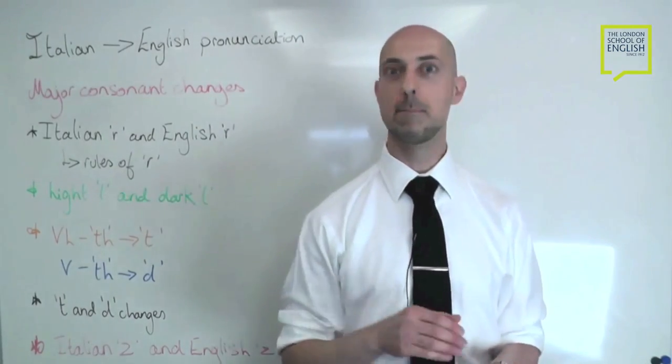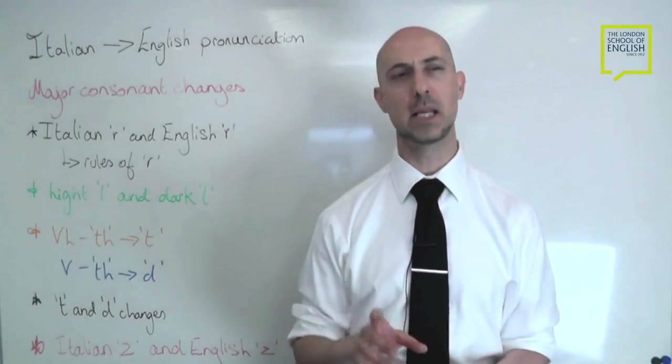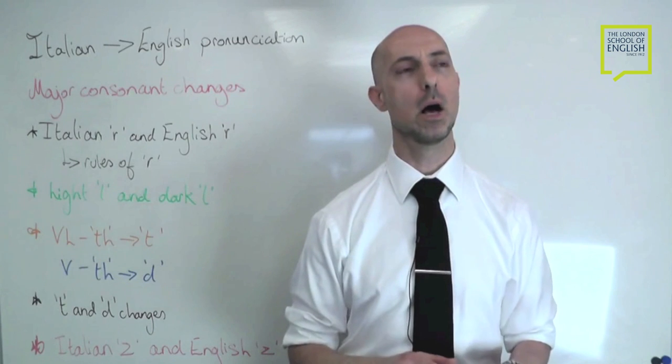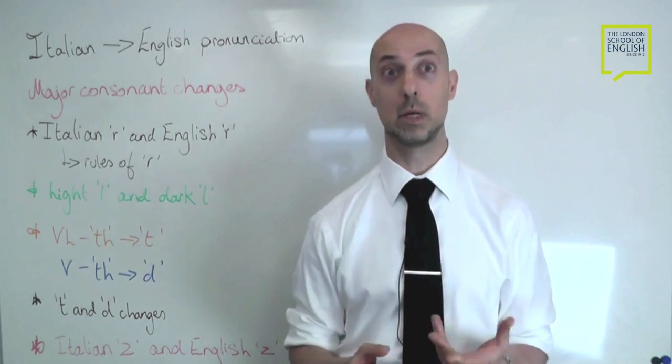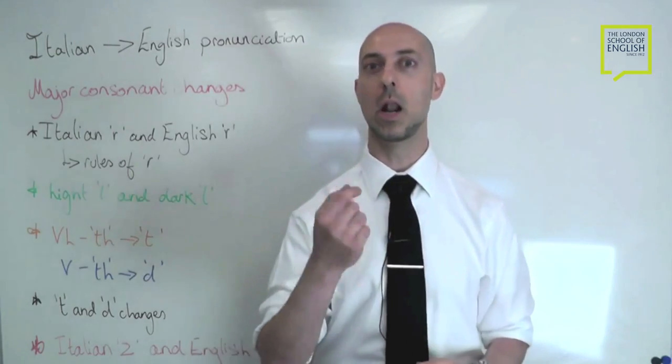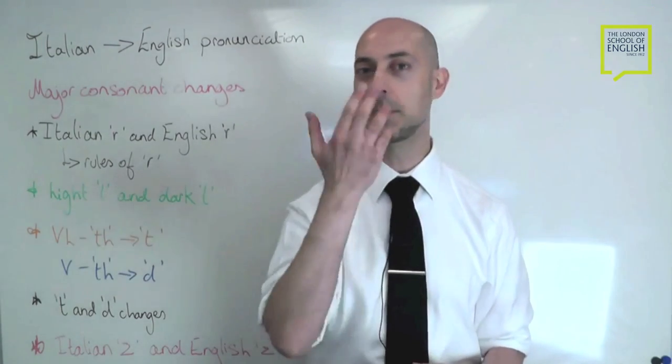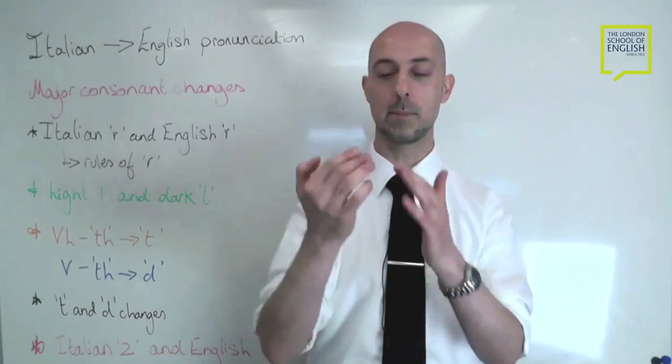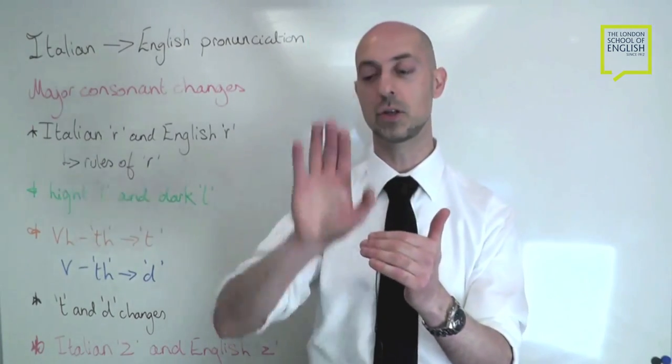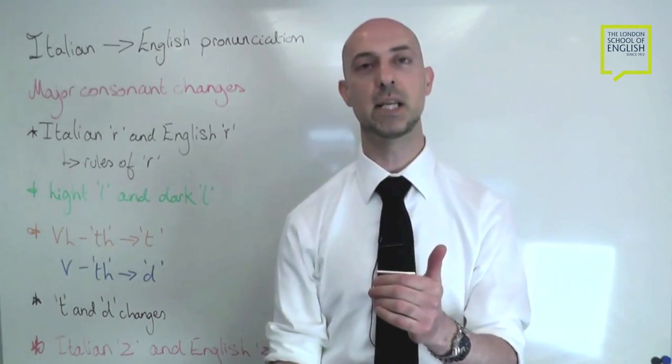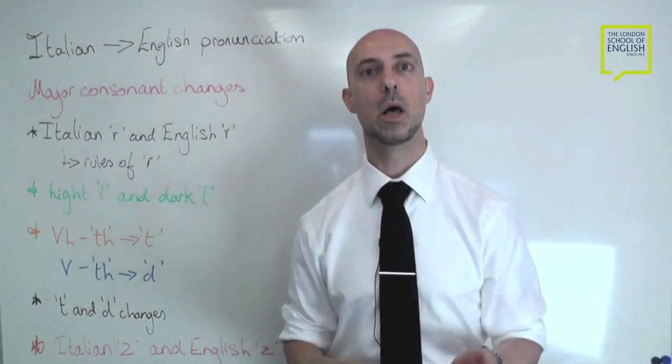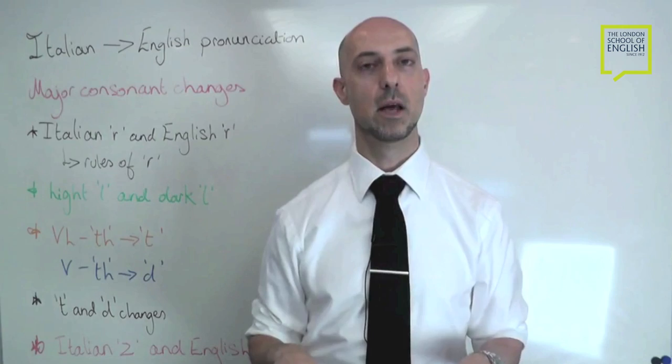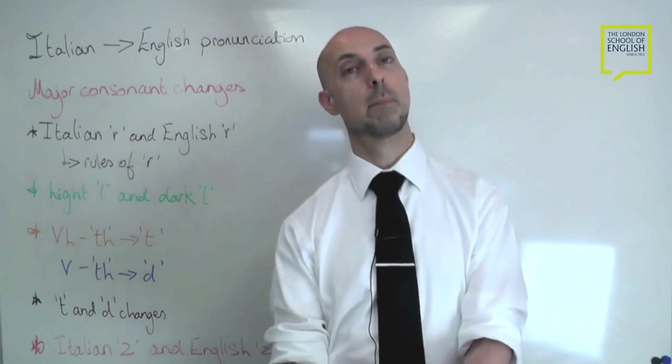Let's look at the light L and the dark L. Now, Italians most definitely use the light L. It's a very liquid L. In my own name, Salvatore, the tip of the tongue goes from behind the front top teeth and just drops gracefully to behind the bottom teeth. That's all it is. That's all you know.